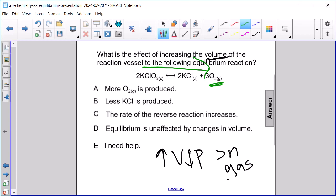So if we take a look here, that's A, more O2 gas is produced, but we can just make sure the rest of these are also incorrect.